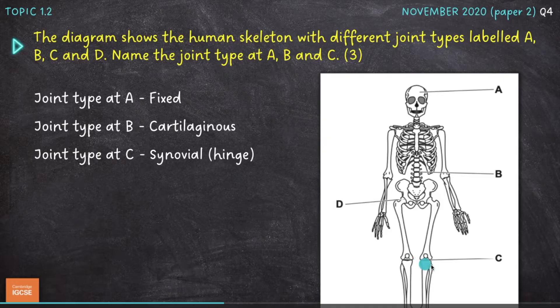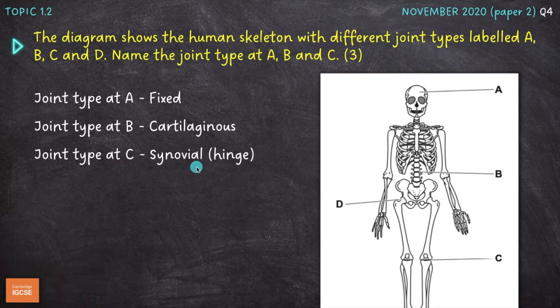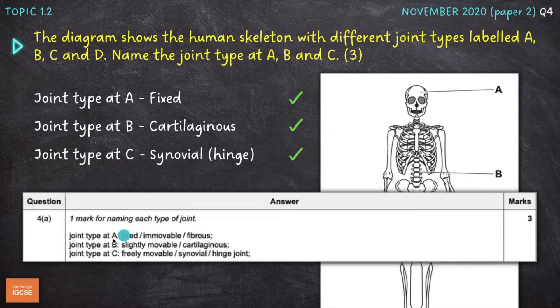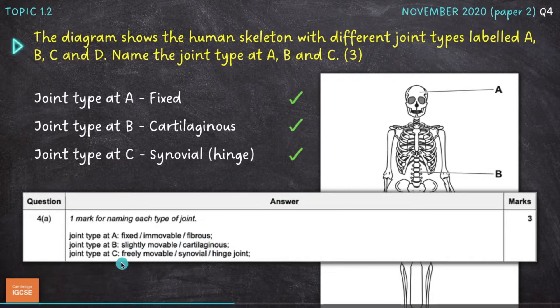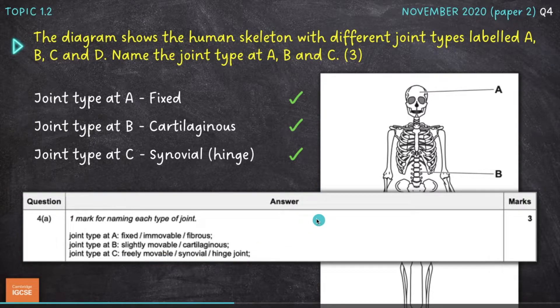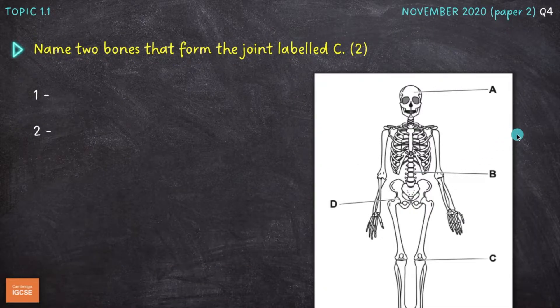And then at C, we have the knee joint, which is a hinge joint, but more generally a synovial or freely movable joint. So let's have a look at the mark scheme. You would have got a mark for saying fixed, immovable or fibrous for that first one, slightly movable or cartilaginous for the second joint, and then freely movable synovial or hinge for joint C.